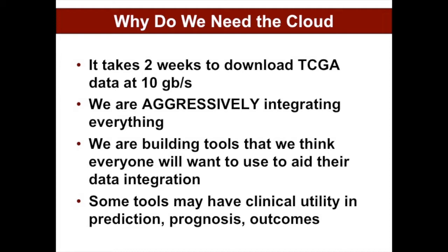This is a major driver of the need to be in a cloud space. It takes three weeks to download TCGA data at 10 gigabytes per second — if you've got access to really fast things and have something in your personal lab big enough to hold these data. And we don't want to use just TCGA data; we want to use all kinds of other things at the same time to do our science. At this point in time, we are aggressively integrating over many different omics dimensions, because we have to — to get anything at all, this is what we're going to have to do. So you have to be in that space.